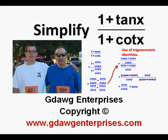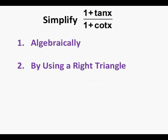Simplify 1 plus tangent x divided by 1 plus cotangent x. In this short presentation, we'll simplify this expression. We'll solve it algebraically, and later, with the use of a given right triangle.